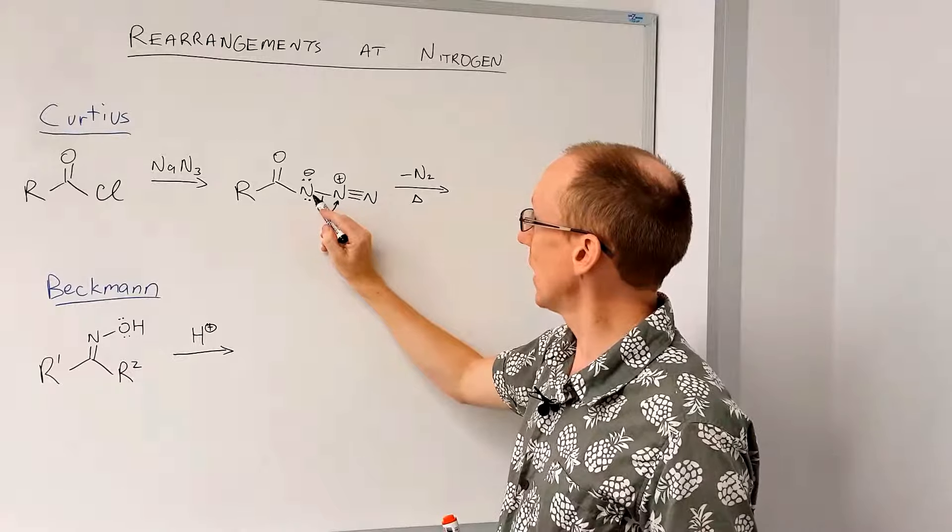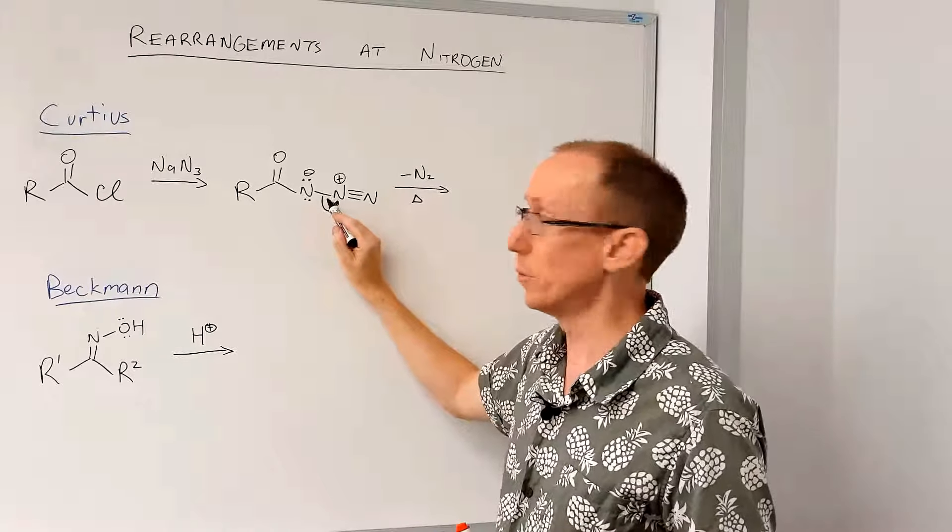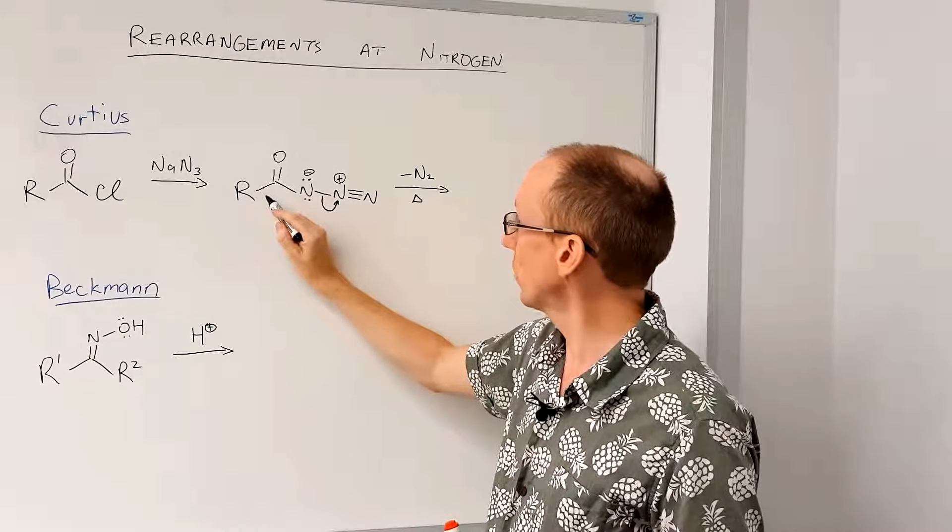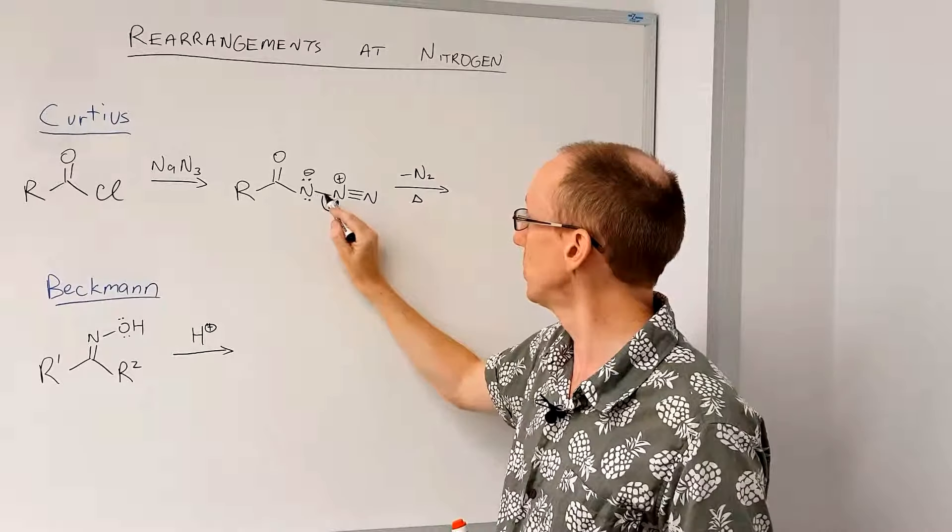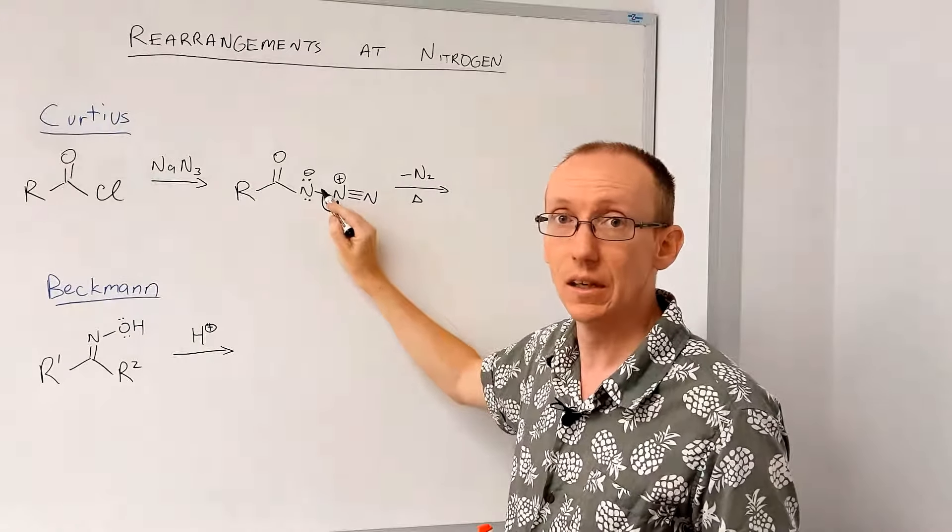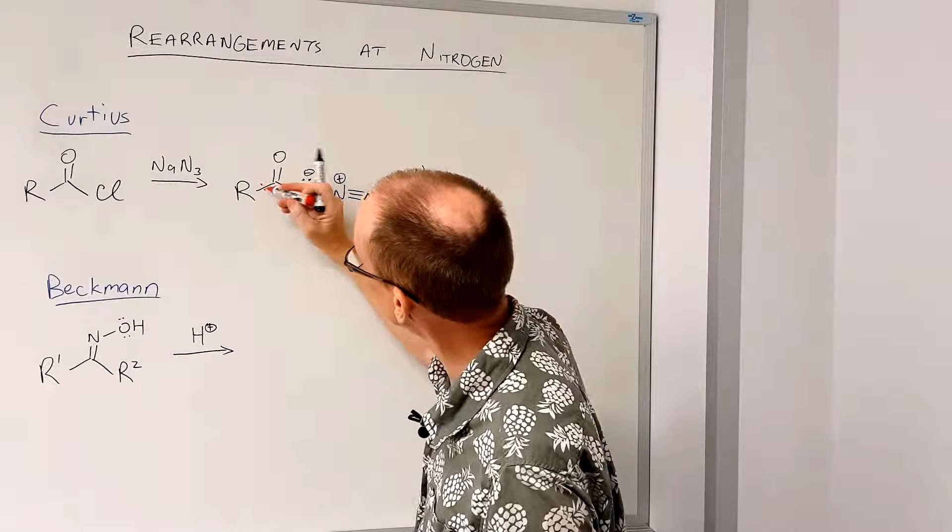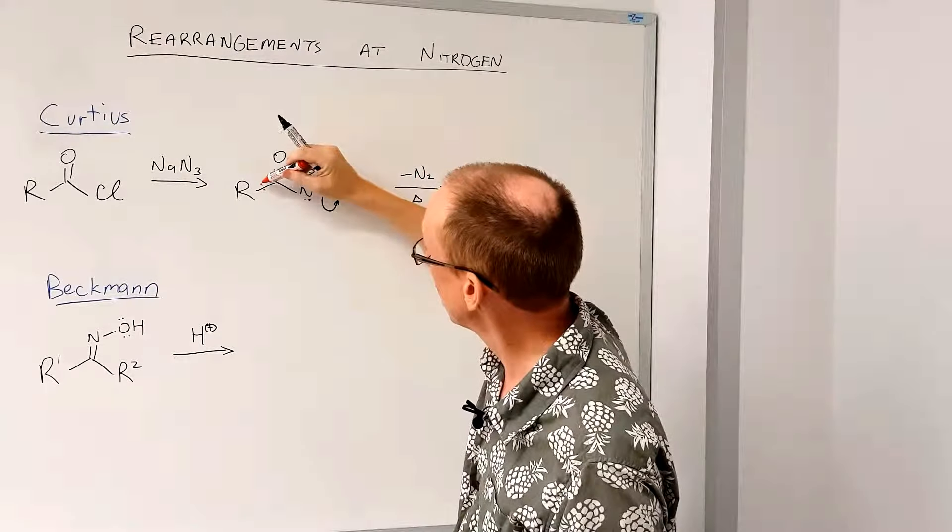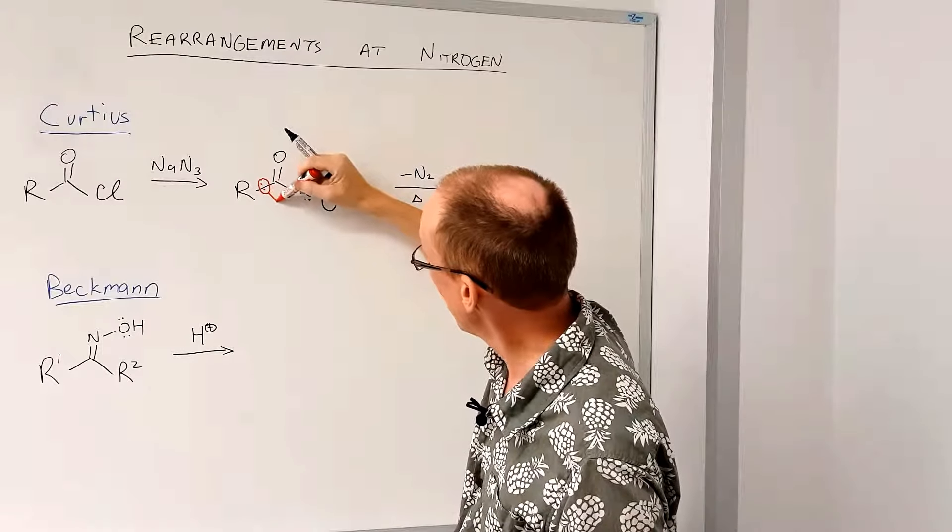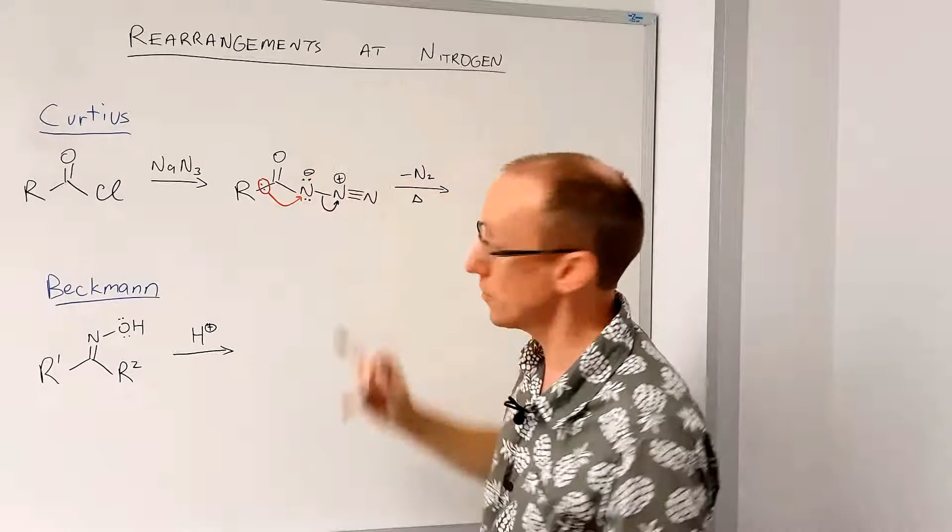And then what happens is that as we lose that group, the R group here migrates to that nitrogen that's losing that pair of electrons. Okay, so it's going to migrate with its pair of electrons. So there we have a pair of electrons migrating across to that nitrogen atom.